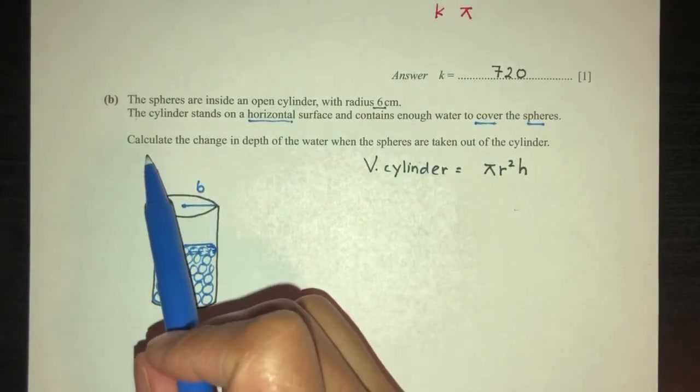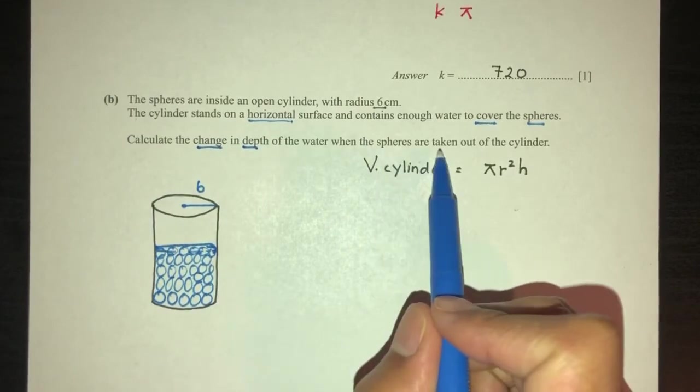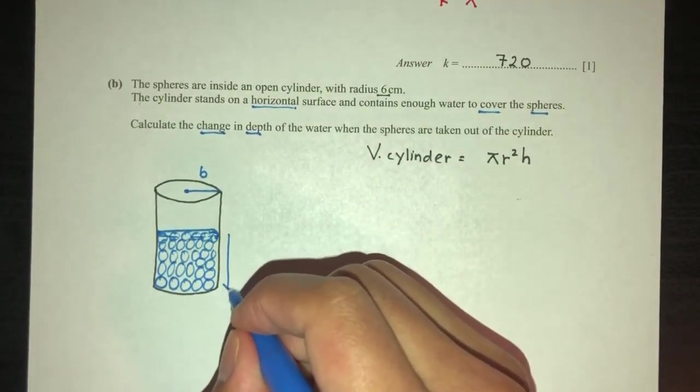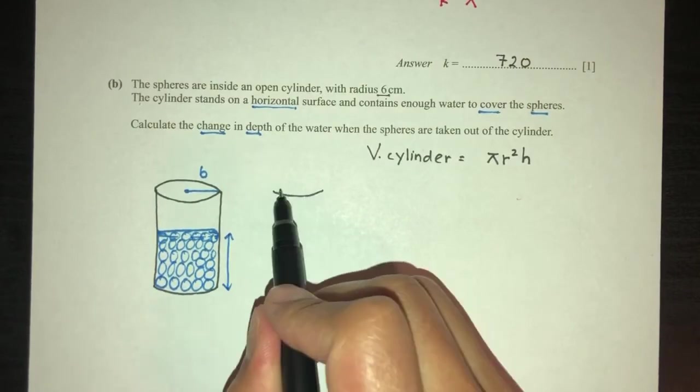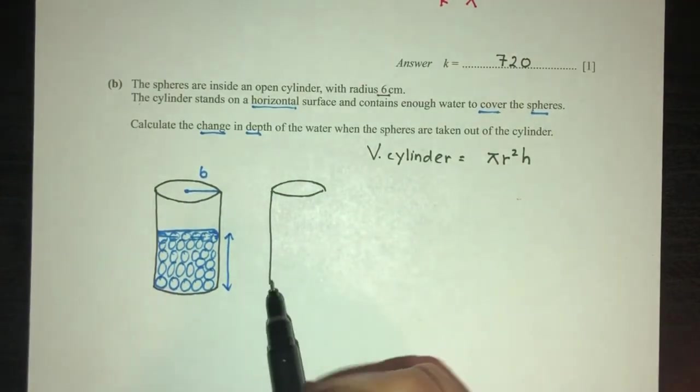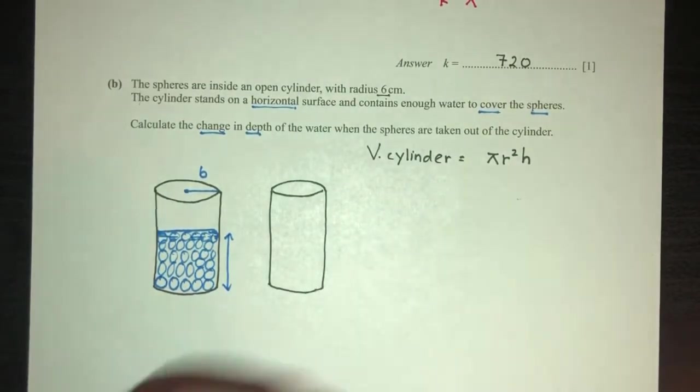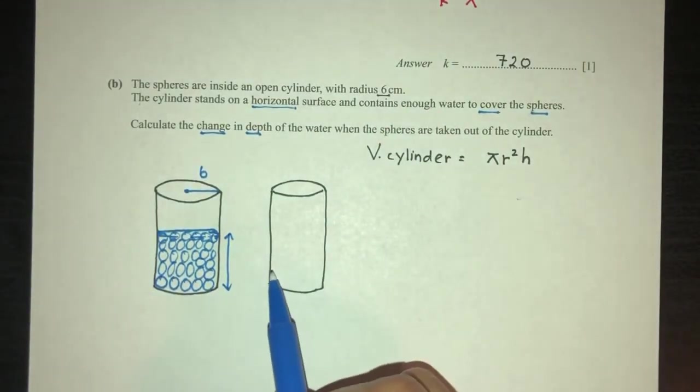So, we have to calculate the change in depth of water when the spheres are taken out. The initial height, we don't know. It is something like this. But now, if you want to take out the spheres, you could assume that when you take out something from water, the level will be decreasing to about here.